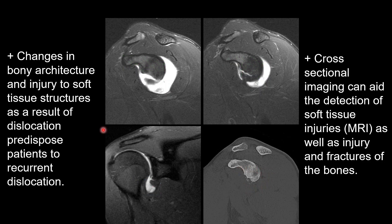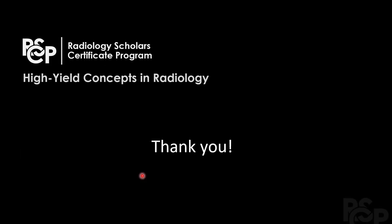It's important to note from a clinical perspective that once these patients have dislocation of the shoulder, injury to the soft tissue such as the capsule and labrum, as well as remodeling of the bone due to fractures such as the bony Bankart lesion or Hill-Sachs fracture, will further predispose them to recurrent dislocation. And this concludes our video on shoulder plain film dislocations and their complications. Thank you for your time.